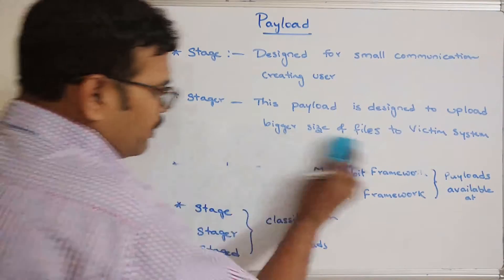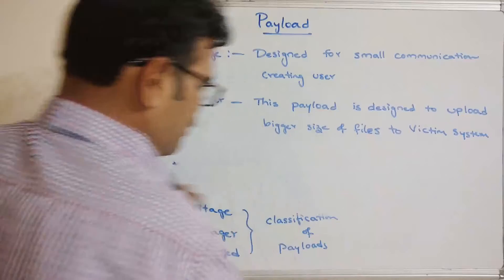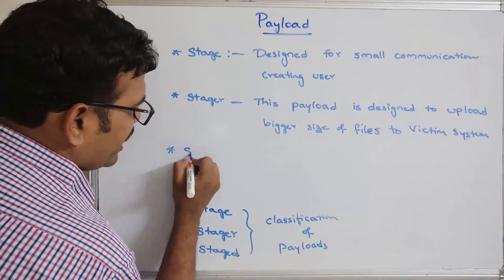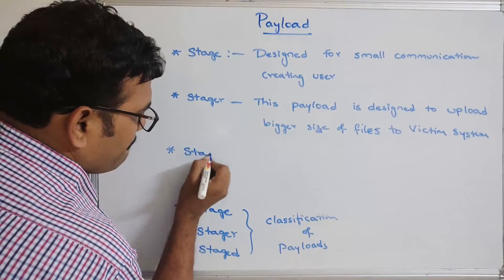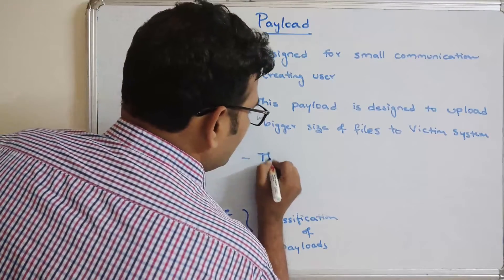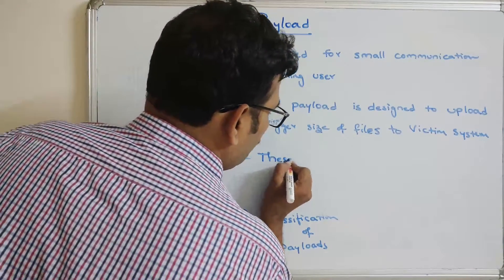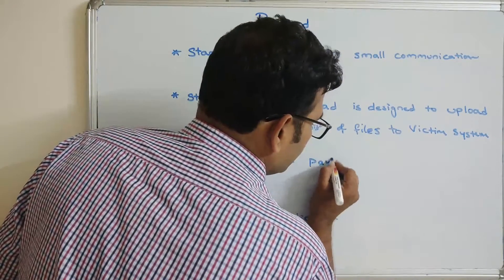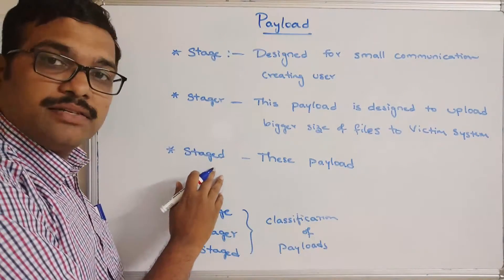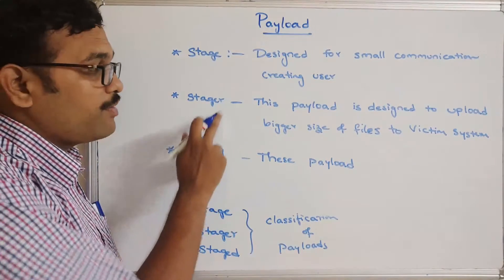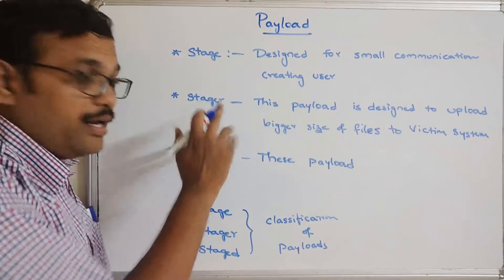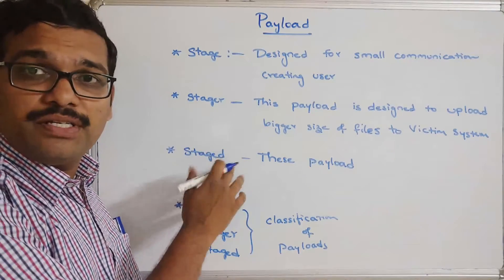The third category is Stage. These are the payload components which are downloaded from the Stager module — the second type. It provides some advanced features, such as no limit on the size of files being uploaded to the victim system.